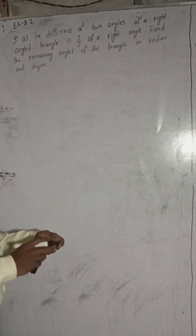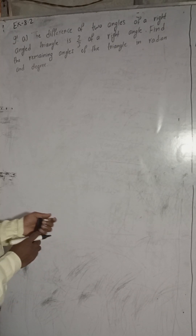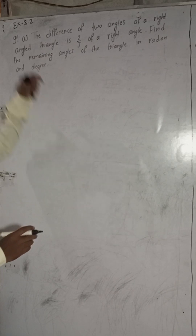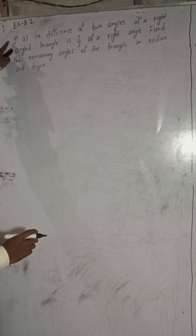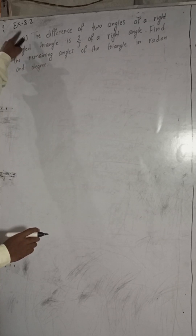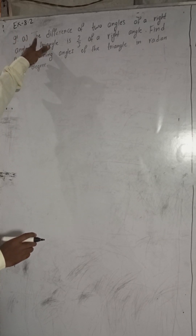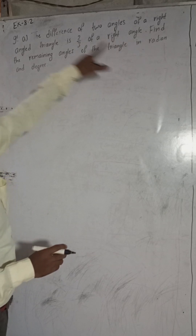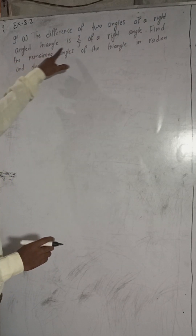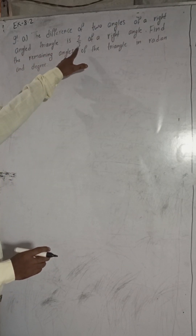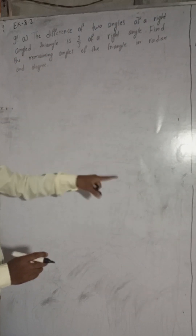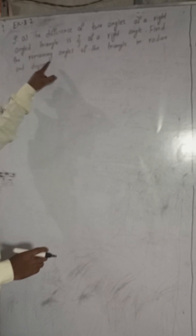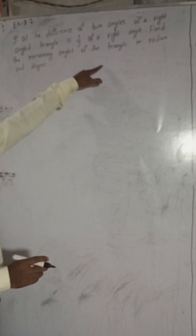Hi everybody, welcome back to Bimal Surgery YouTube channel. Now I am going to solve 9A exercise 8.2: the difference of two angles of a right angle triangle is 2/3 of a right angle — find the remaining angles of the triangle in radian and degree.